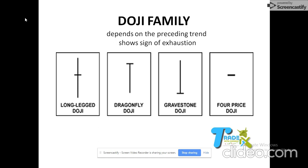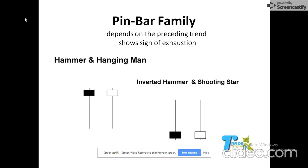In the Doji family, we have the long-legged Doji, the Dragonfly, and the Gravestone — three of them. The Dragonfly is a signal to buy massively; the Gravestone is a signal to sell massively. The long-legged Doji signals indecision and tells you that the preceding trend is getting exhausted, so try to identify the preceding trend.